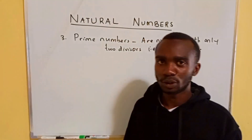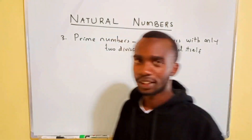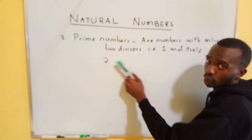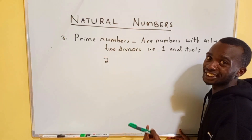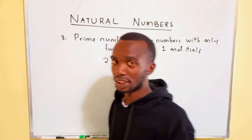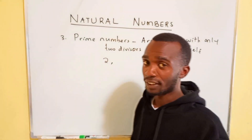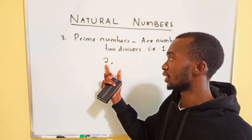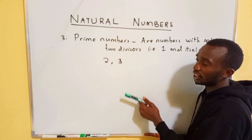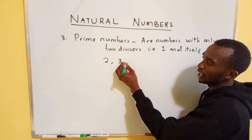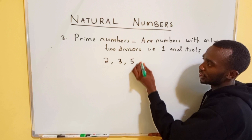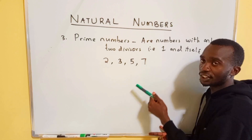A prime number has only two divisors. The first prime number is 2 — numbers which can divide 2 are 1 and 2. Note that 1 is not a prime number because it has only itself. The first prime number is 2; the next is 3, since the only divisors of 3 are 1 and 3. The next prime number is 5 — its two divisors are 1 and 5. Then 7 — the numbers which can divide 7 are 1 and 7 only.